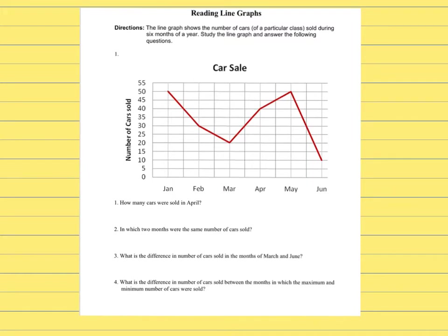To make a generalization: if the independent variable is given and you want to look for the dependent, you go up all the way through your line and then go all the way to the left. But if the dependent variable is given and you want to find the independent variable value that corresponds with it, you look for the number on the y-axis, move to the right all the way through your line, and then go down to read.